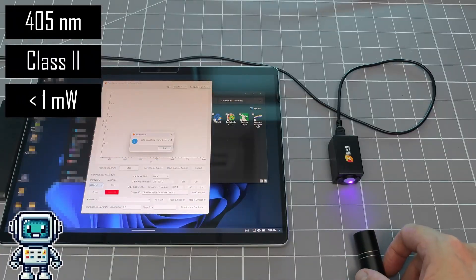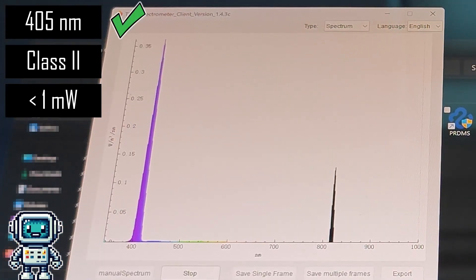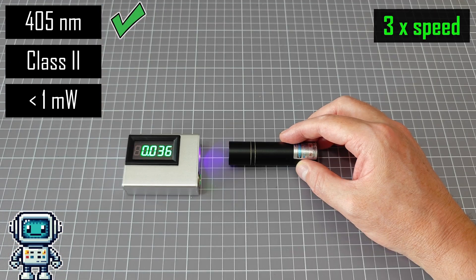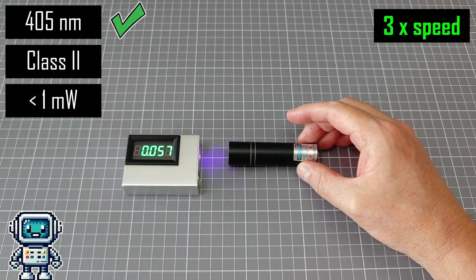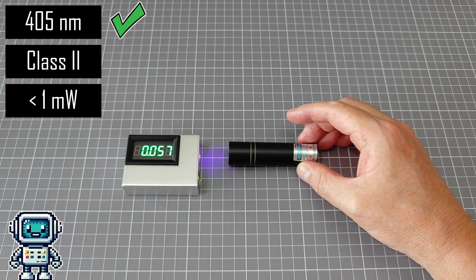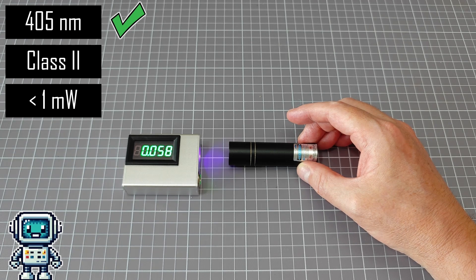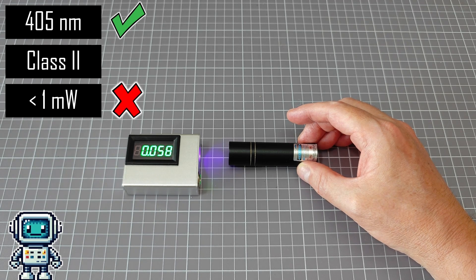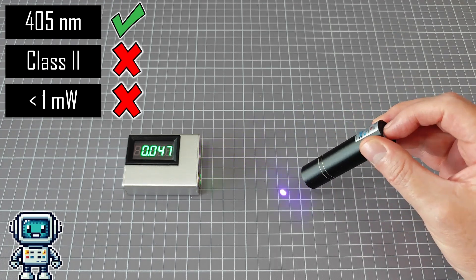When checking the wavelength of the emission with a spectrometer, it seems to agree with the specification. But when we look at the output power, we see something quite alarming. Instead of less than 1 milliwatt of power that we are expecting, we are getting about 58 milliwatts of output from this laser. So this is actually a Class IIIB laser, not a Class II device.